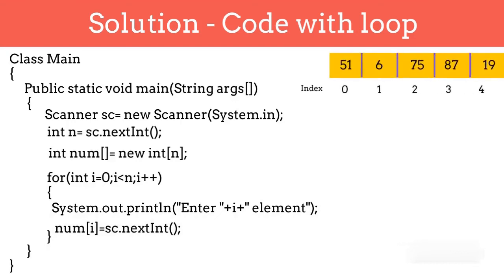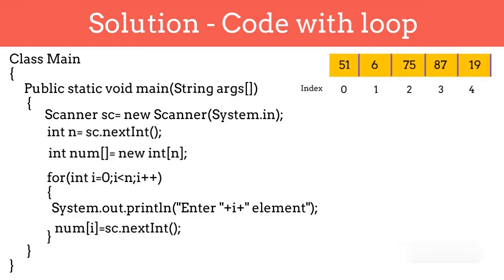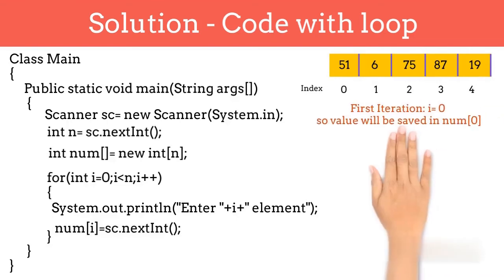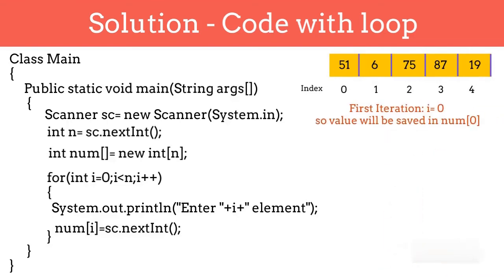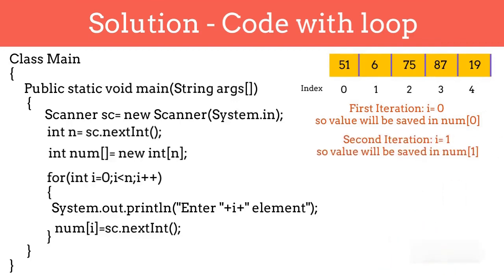When the loop starts, the initial value of i will be 0, so the user will enter the first element and it will be saved at the 0th location. For the second iteration, i becomes 1, the user enters a value, and it is saved at the first location. This continues until the nth number. Once the loop ends, we will have all the elements stored in the array.